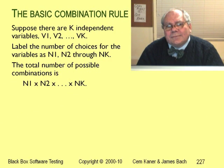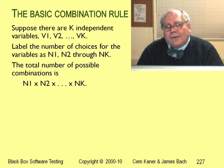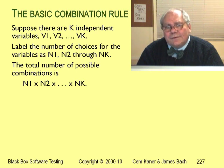Combination testing is about testing variables together. Let's imagine testing three variables: V1, V2, and V3. Let's suppose that V1 has N1 possible values, V2 has N2, and V3 has N3 possible values. The total number of combination tests of V1, V2, and V3 is N1 times N2 times N3.